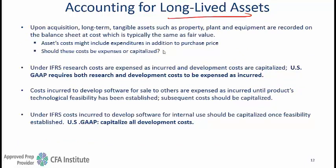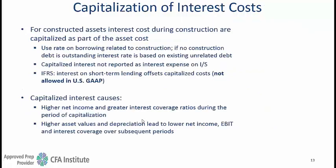For accounting of long-lived assets with research and development costs, IFRS says you expense research costs but can capitalize development costs, whereas US GAAP says both research and development costs must be expensed. When developing software for internal use, US GAAP says you capitalize all software development costs, while IFRS says you expense until feasibility is established and capitalize after that. For capitalization of interest, a subtle difference is that under IFRS interest on short-term lending offsets capitalized cost, which is not allowed under US GAAP.